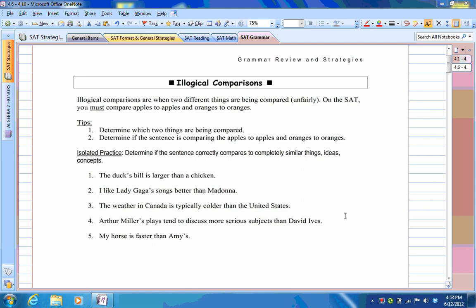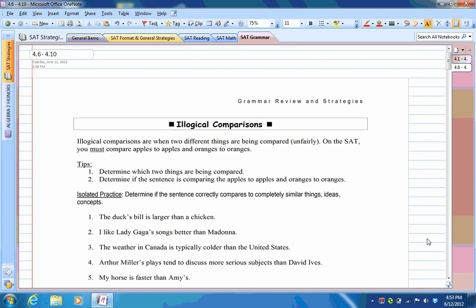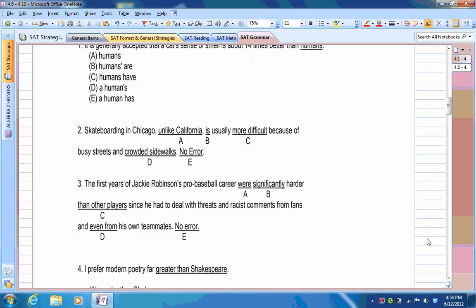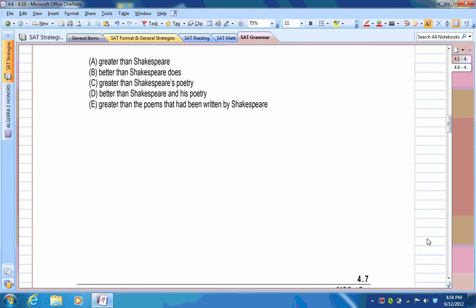Alright, we're now going to discuss grammar review from pages 4.6 to 4.10. Like before, we're only going to talk about two types of grammar rules: illogical comparisons and then parallel structure.